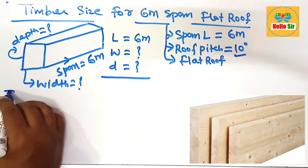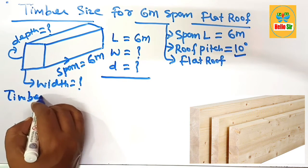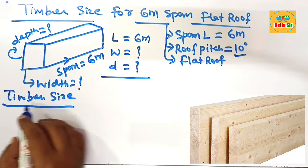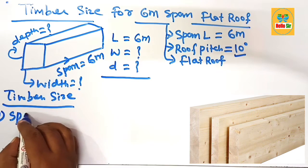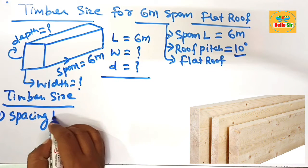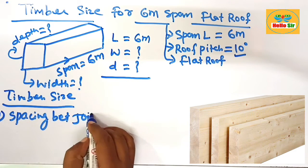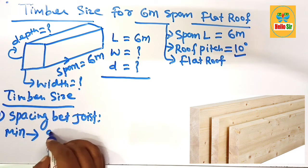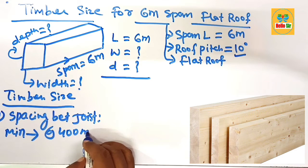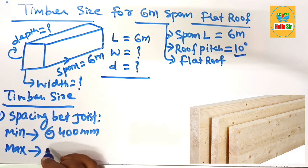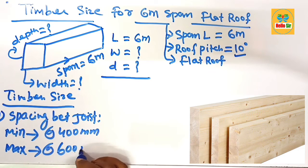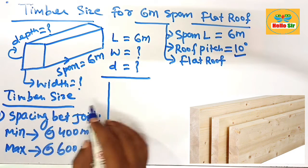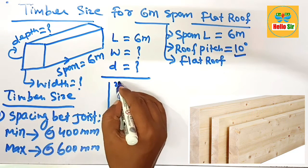Now the timber size depending on many factors like the construction requirement and spacing between the joist. First is spacing between the joist. What will be spacing between the joist? The minimum of spacing between the joist is about 400 mm and the maximum of spacing between the joist is about 600 mm and this is the first factor that decides the timber size.